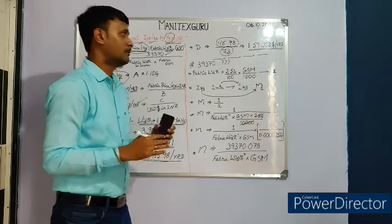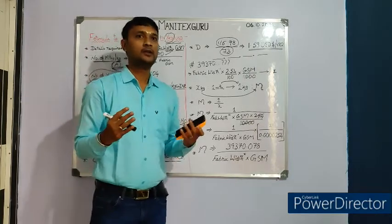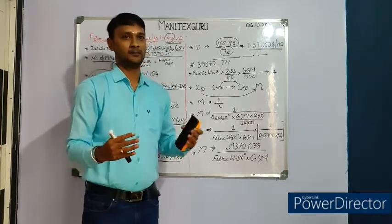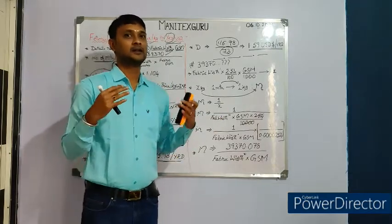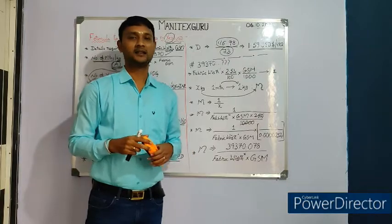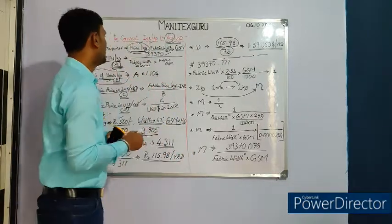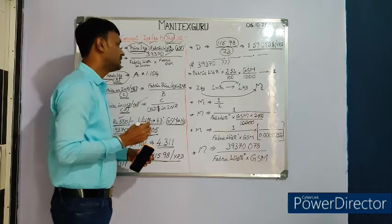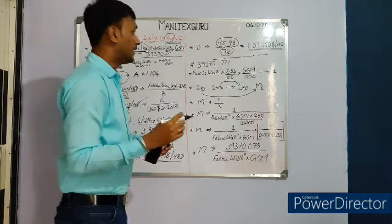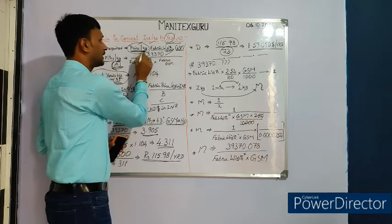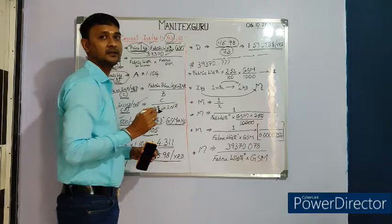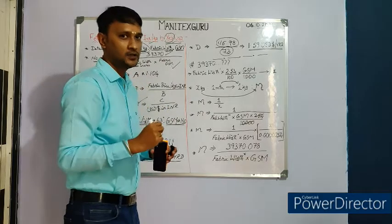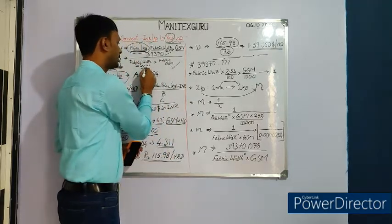Before applying any formula, it's important to understand how the formula was derived, so it stays registered in your mind for a lifetime. Let's see how the initial formula — 39,370 divided by fabric width in inches multiplied by fabric GSM — was derived. We have three data points: fabric price per kg, fabric width in inches, and GSM.